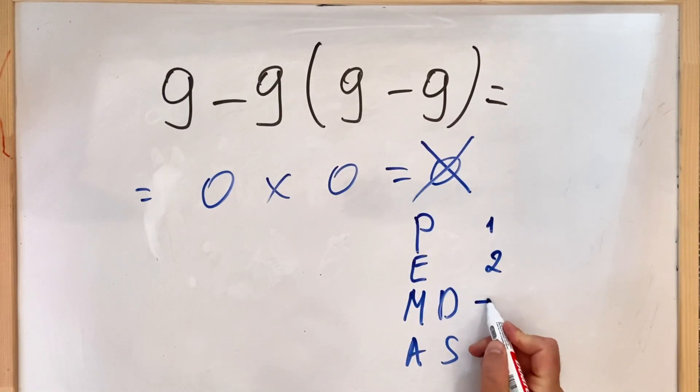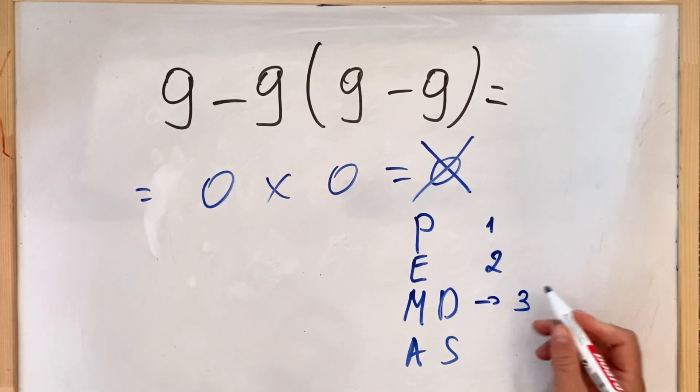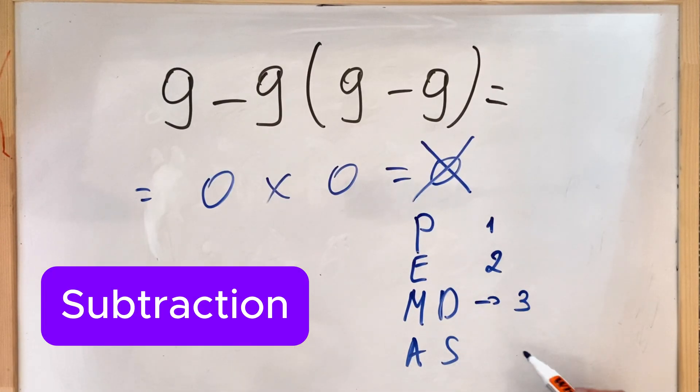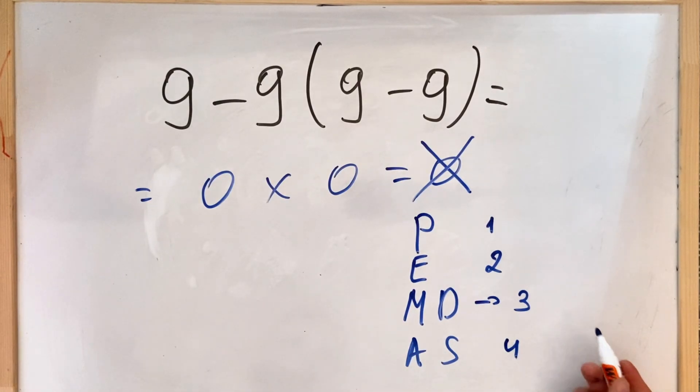Then multiplication and division have equal priority. If we have them in the equation, we do it from left to right in the third place. Here we don't have it. And last, we do addition and subtraction in the fourth place. So in our case, we should start with whatever we have in parenthesis.